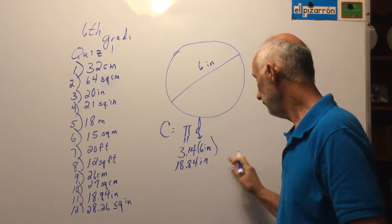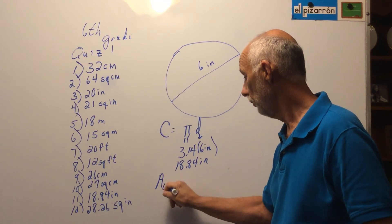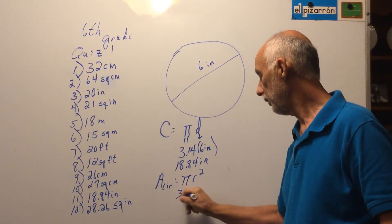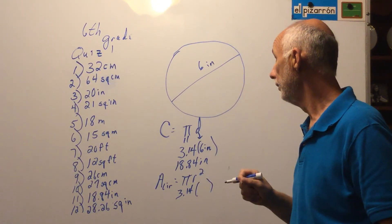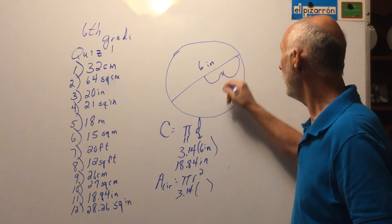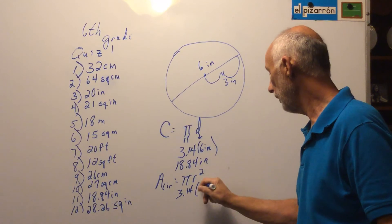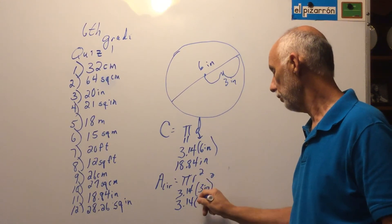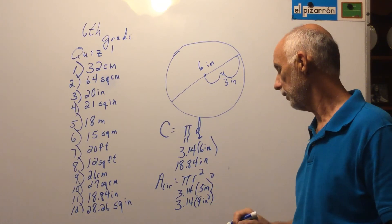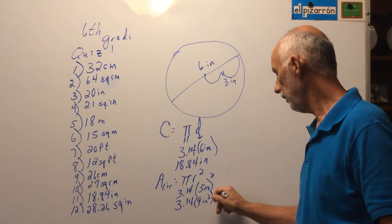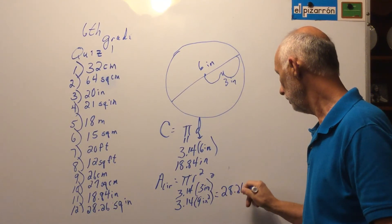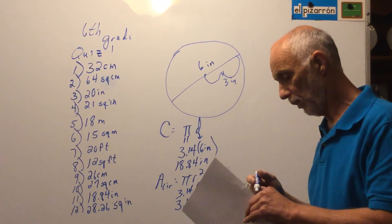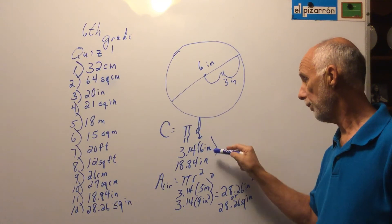The area of a circle equals pi times the radius squared — pi r squared. Pi is 3.14. The radius is half the diameter, so if the diameter is six inches, the radius is three inches. You have to square it: three inches times three inches is nine inches squared. Then 3.14 times nine is 28 and 26 hundredths inches squared, or 28 and 26 hundredths square inches.